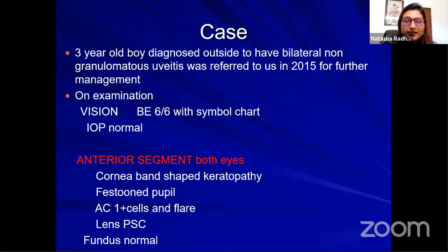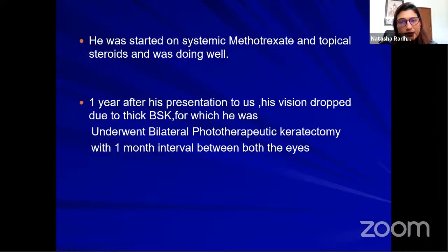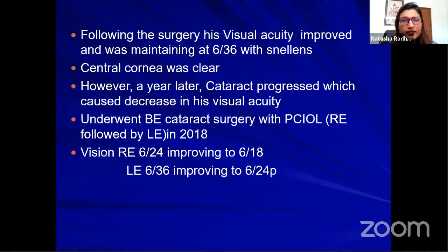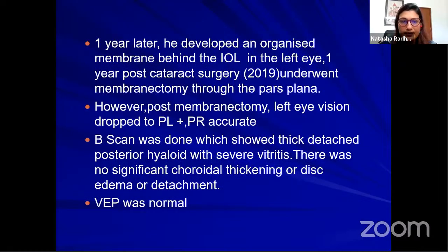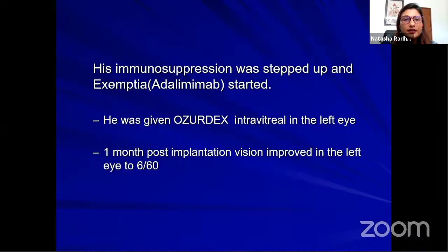Treatment of non-infectious uveitis in children: topical corticosteroids for anterior segment inflammation; periocular or sub-Tenon's corticosteroids for intermediate or posterior uveitis and CME. Cataract surgery requires a 3-month activity-free interval; systemic immunosuppression must be stepped up 2 weeks prior and continued for a month after. A complex case is described: a 3-year-old boy with bilateral non-granulomatous uveitis with BSK and festooned pupil started on systemic methotrexate and topical steroids, then requiring bilateral PTK for thick BSK improving vision to 6/36.